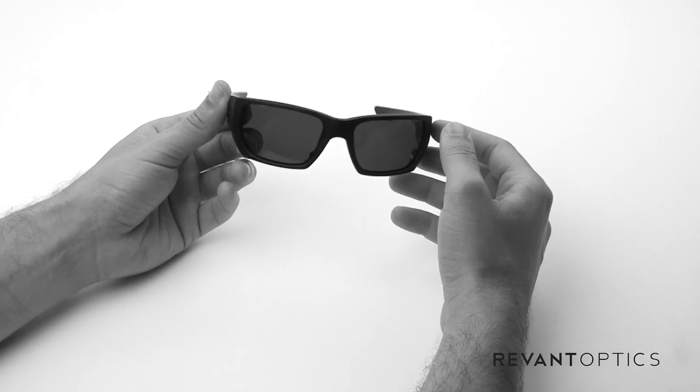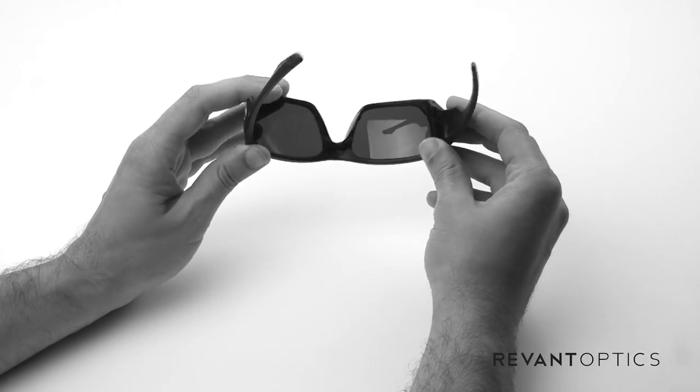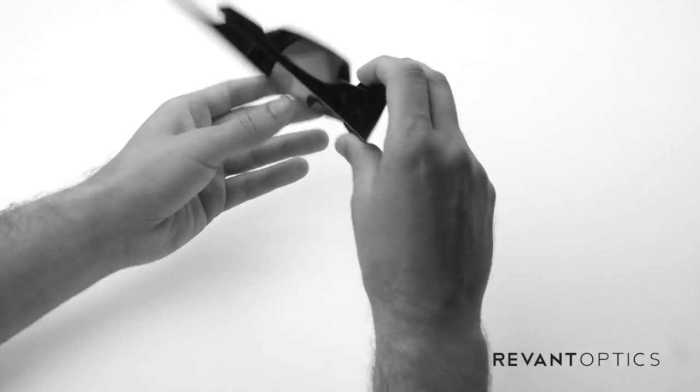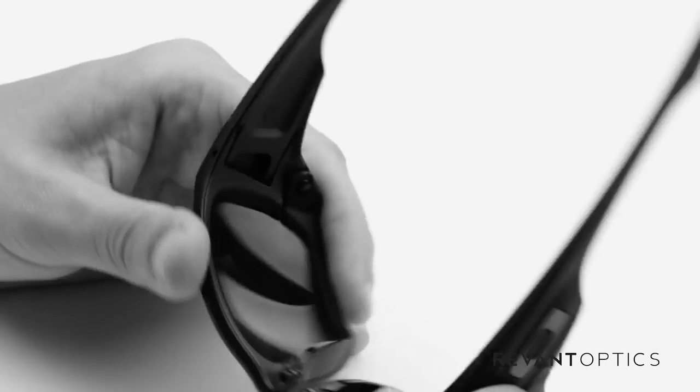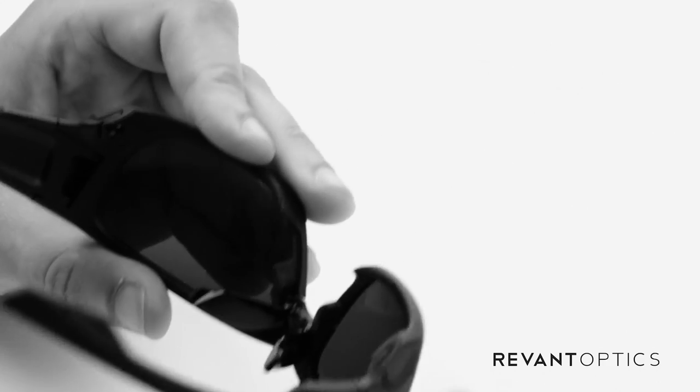This is a plastic frame, it's a newer frame for Oakley and they make it very easy to replace lenses in this frame. So what I like to do is turn it upside down and then you're going to pull on the nose pieces here, pop out easily like that.